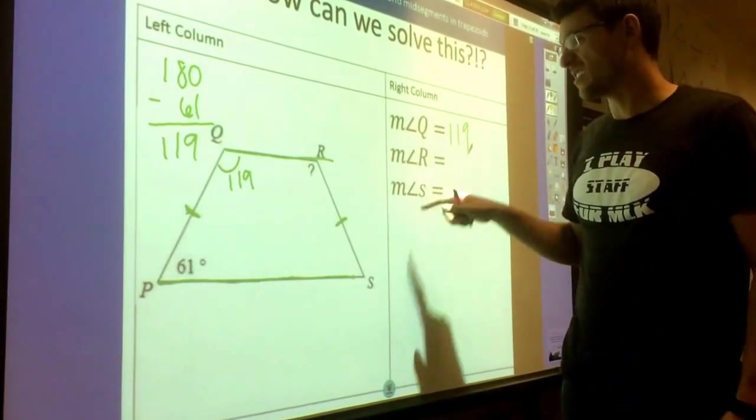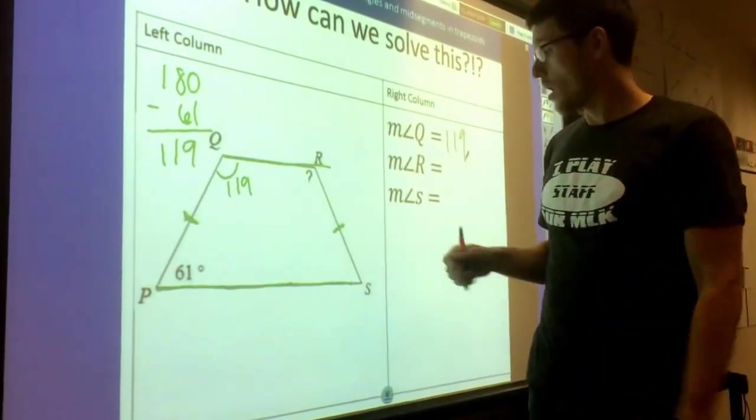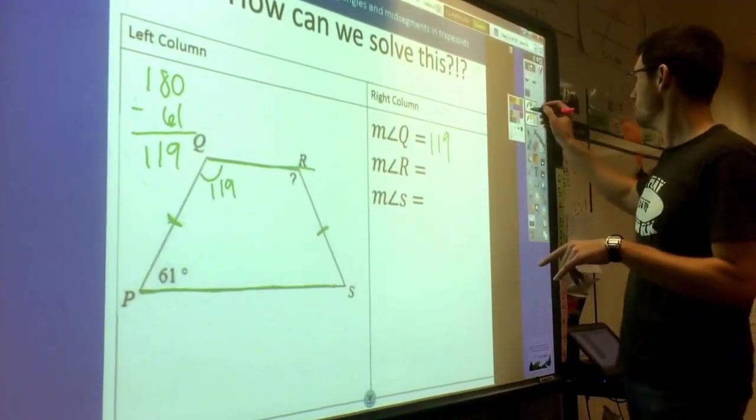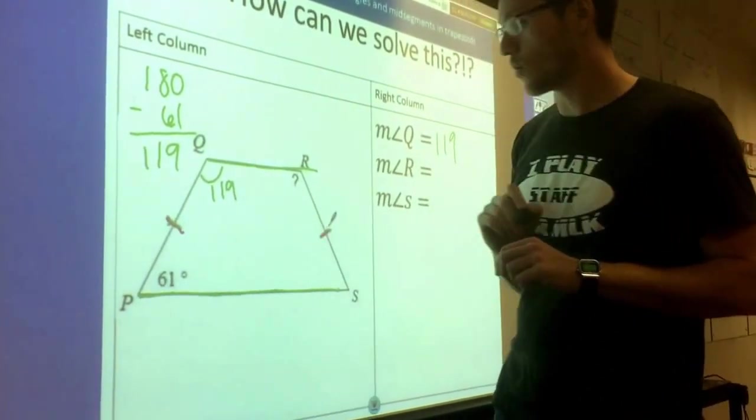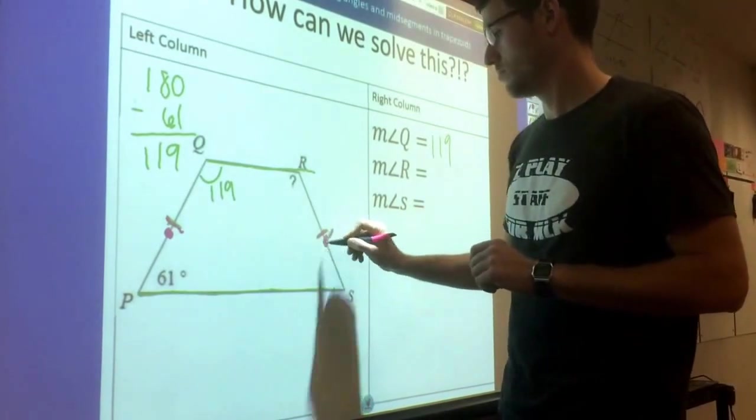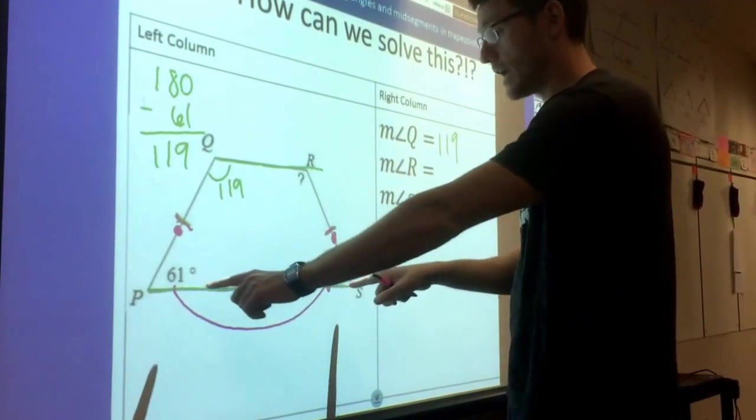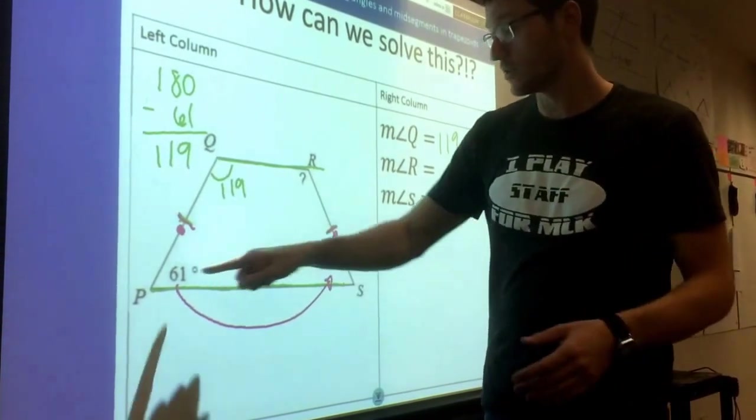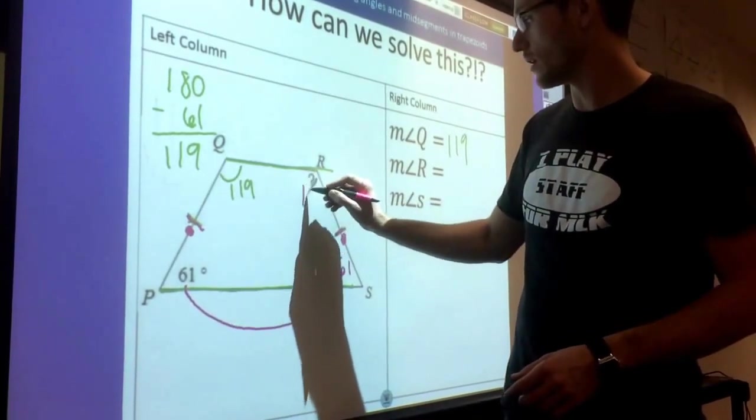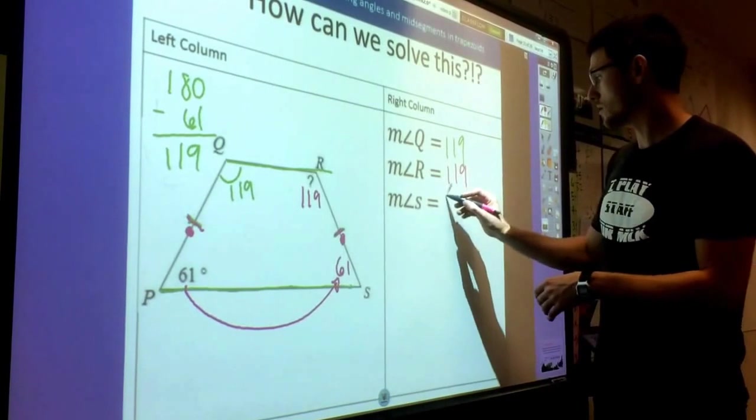And now we're looking for measure of angle R and angle S. If this was just a normal trapezoid, we would be stuck and we would write not enough information. But these little hash marks here actually tell us a lot about this shape. This is an isosceles trapezoid, which means that these two sides are the same, and that tells us quite a bit of information. These angles that are next to each other and on the same base are actually congruent. So not only is this 61, we've got a 61 over here as well. And same thing up top. 119 is going to match over here, we've got 119 again. So R was 119 and S was 61 degrees.